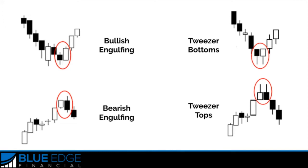Tweezer patterns usually occur after an extended uptrend or downtrend, indicating that a reversal will soon occur. The candlestick formation looks just like a pair of tweezers. The first candlestick is the same as the overall trend — for example, with tweezer bottoms you can see it's trending down, with bearish candles trending down, so the first one is also a bearish candle moving down.